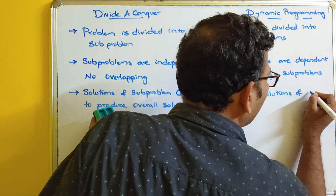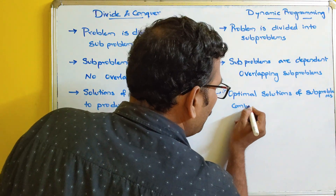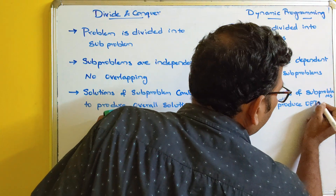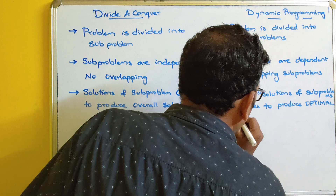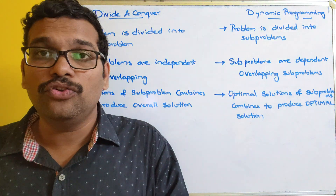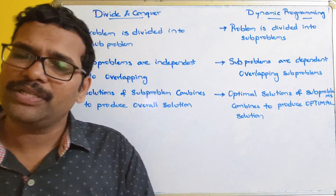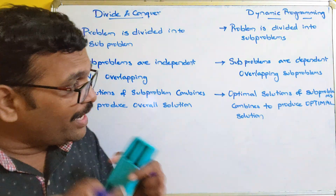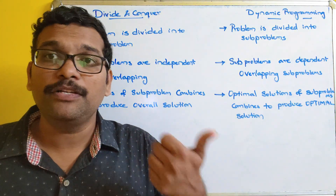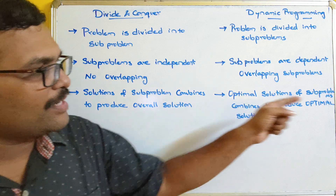In divide and conquer, we can't say the solution is optimal — there will be only one solution. We call a solution optimal when we have multiple feasible solutions and we want to select the best one among them.